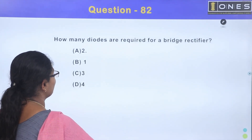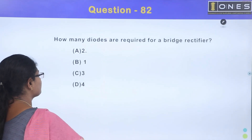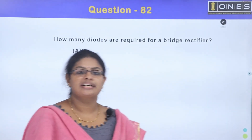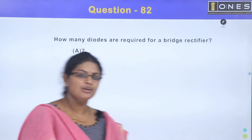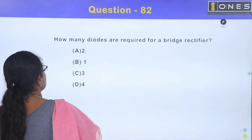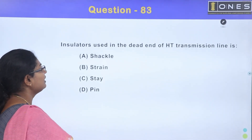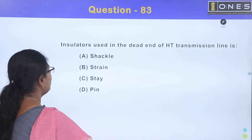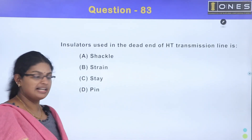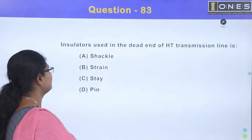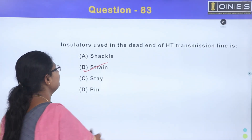How many diodes are required for a bridge rectifier? For a high transmission line dead end, we use insulators — specifically strain insulators. The answer is Option B, strain insulator.